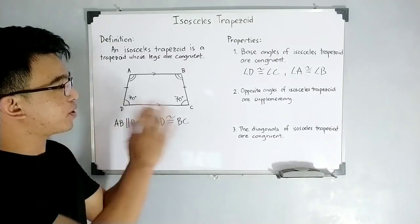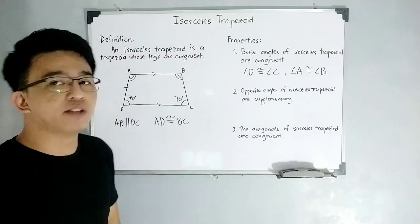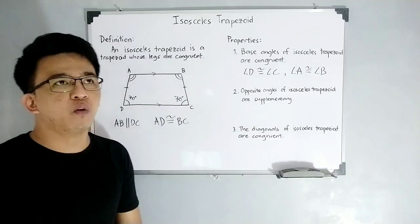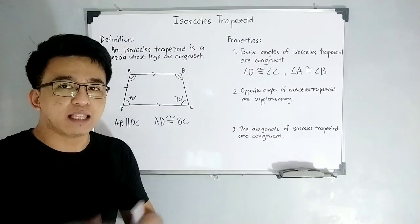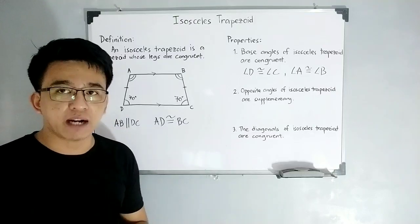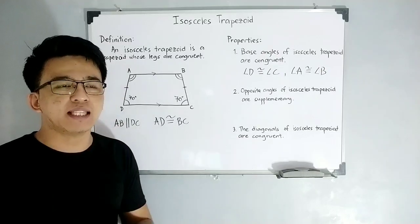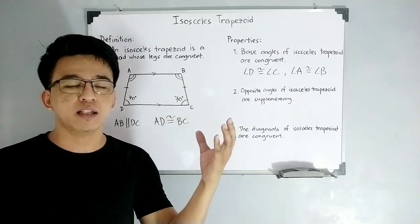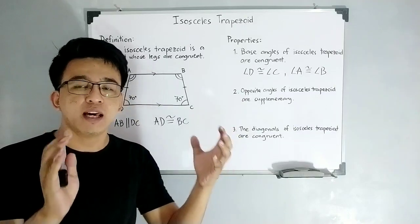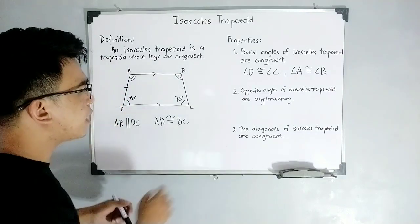So let's move on with property number two. According to property number two, opposite angles of isosceles trapezoid are supplementary. So when we say supplementary angles, again, let me repeat the definition of it. Supplementary angles are angle pairs that has the sum of 180. Or in other words, if we add angle one plus angle two, if their sum is equal to 180, therefore, these two angles are supplementary to each other.